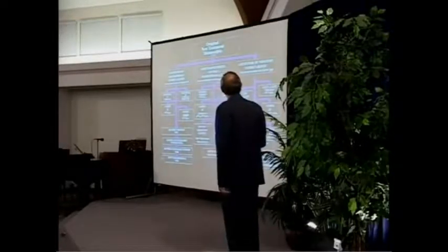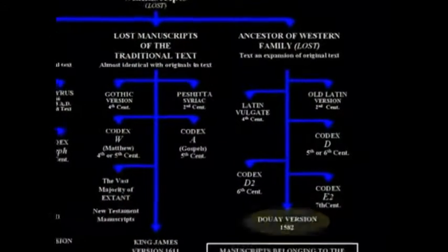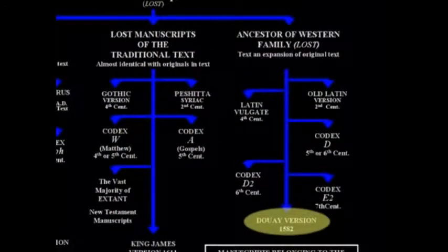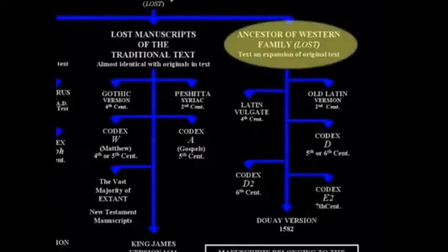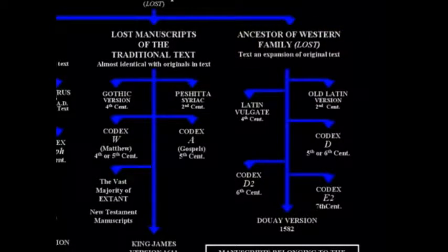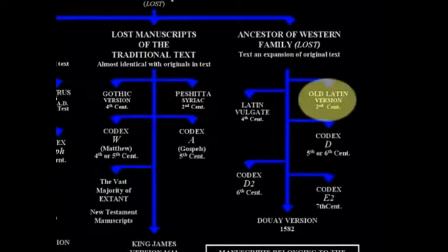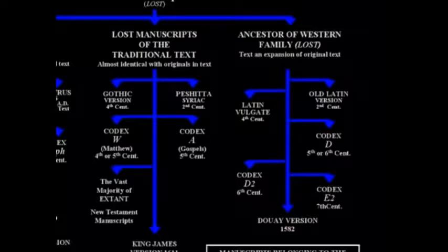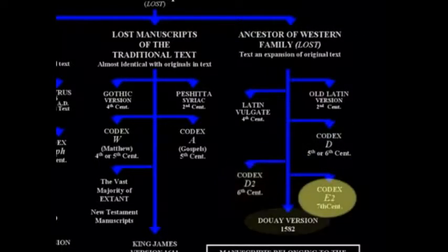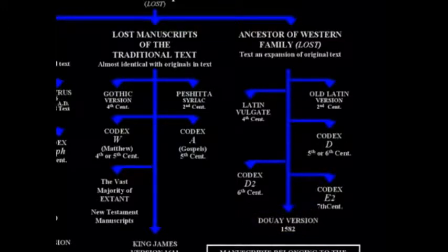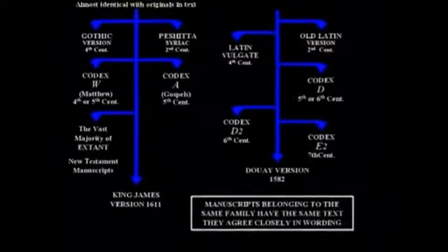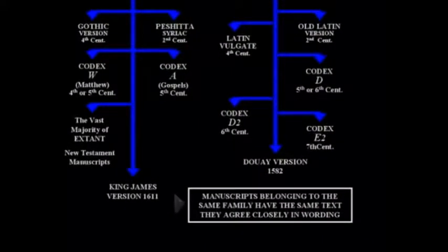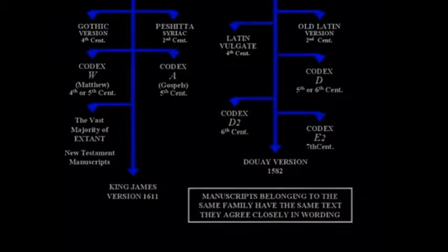Then there are two other streams. One led to the Douay Version — basically the Jesuit Version — whose ancestor is a Western family that is lost. The text is an expansion of an original text. From that you have the old Latin version, the Latin Vulgate Version which the Pope declared to be infallible, Codex D, Codex D2, Codex E2, and the Douay Version of 1582, which was written to counteract the Reformation. Manuscripts belonging to the same family have the same text — they all agree closely in the wording.